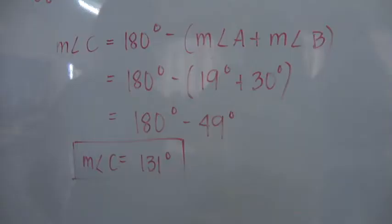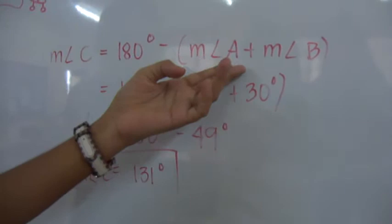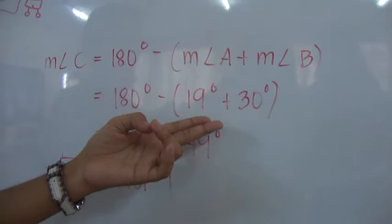we use 180 degrees minus the measure of angle A plus measure of angle B. 180 minus the sum of 19 degrees and 30 degrees. 180 minus 49 degrees is equal to 131 degrees. The measure of angle C is 131 degrees. To solve for side C,